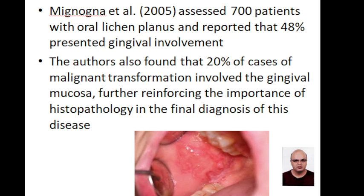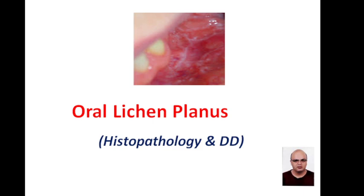Some studies indicate that there is widespread gingival involvement in oral lichen planus. Oral lichen planus can sometimes have a high malignant transformation rate. In some studies, up to 20% malignant transformation is seen, but mostly only 2% of lichen planus cases transform into malignant disease.